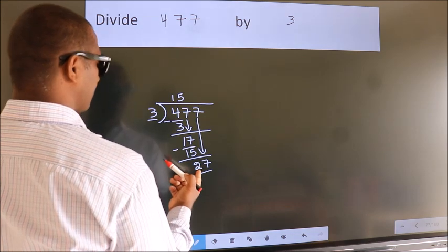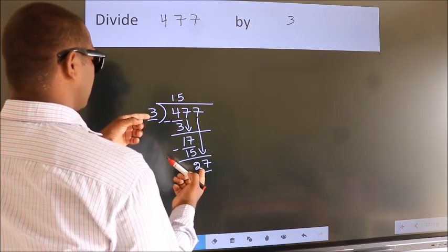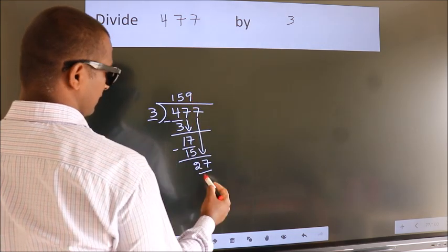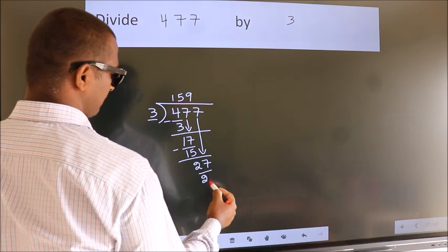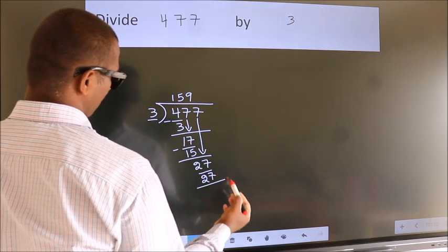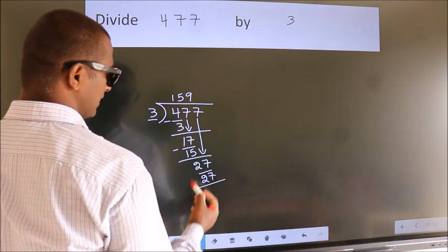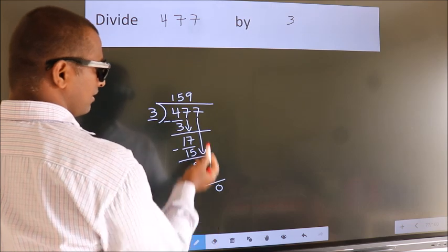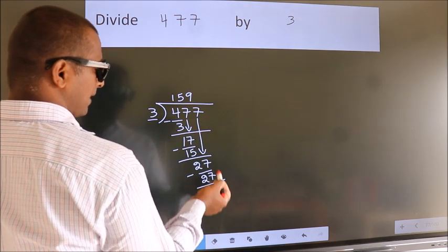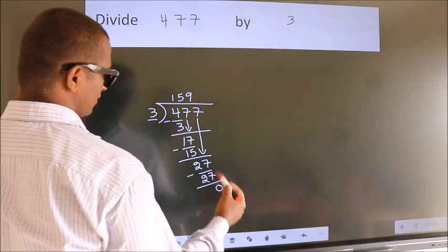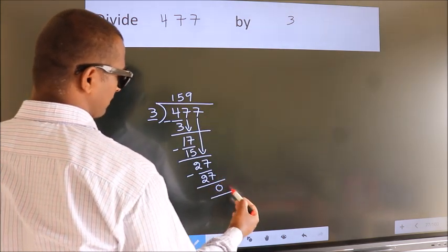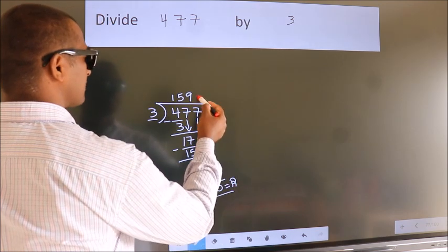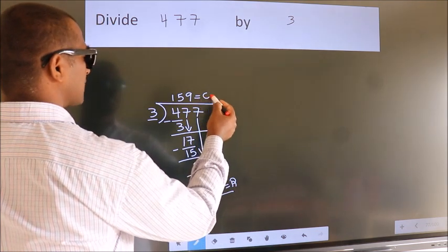When do we get 27 in the 3 times table? 3 nines are 27. Now we subtract. We get 0. No more numbers to bring down, so we stop here. This is our remainder and this is our quotient.